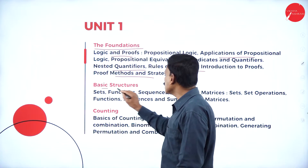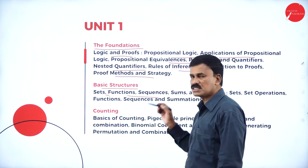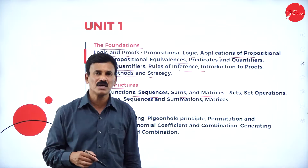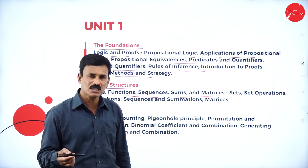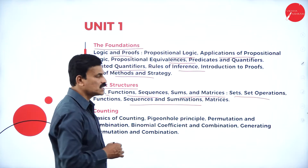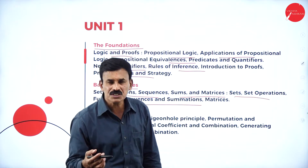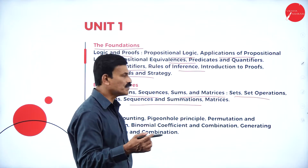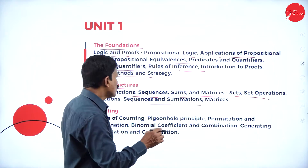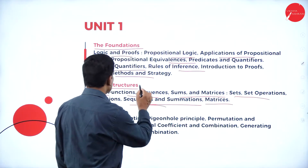In the second basic structures section, we will study sets, relations, and functions. This covers construction of sets, different types of functions, sequences, and matrices — including sum, difference, and algebra of matrices such as addition, subtraction, scalar multiplication, and matrix multiplication. Operations on sets include union, intersection, complementation, and different types of functions such as one-to-one functions and onto functions. These are the fundamental things in the basic structures of the first unit.